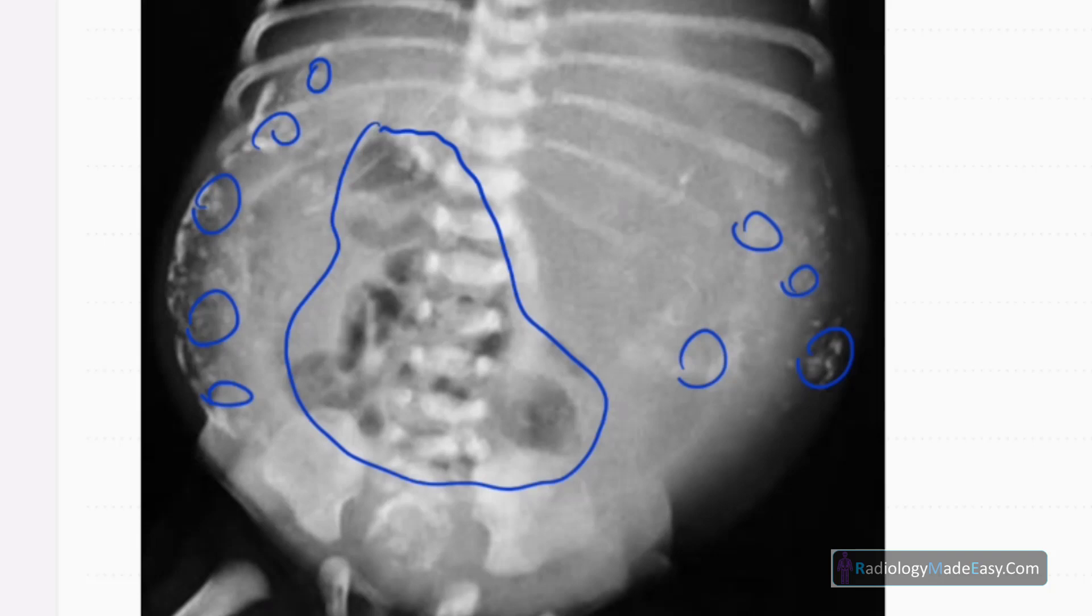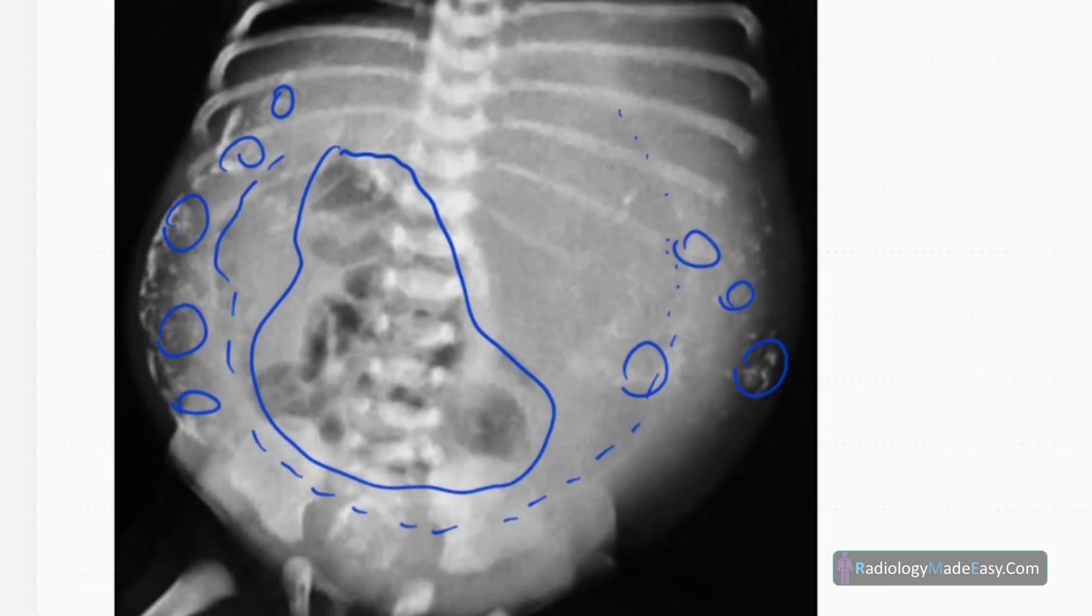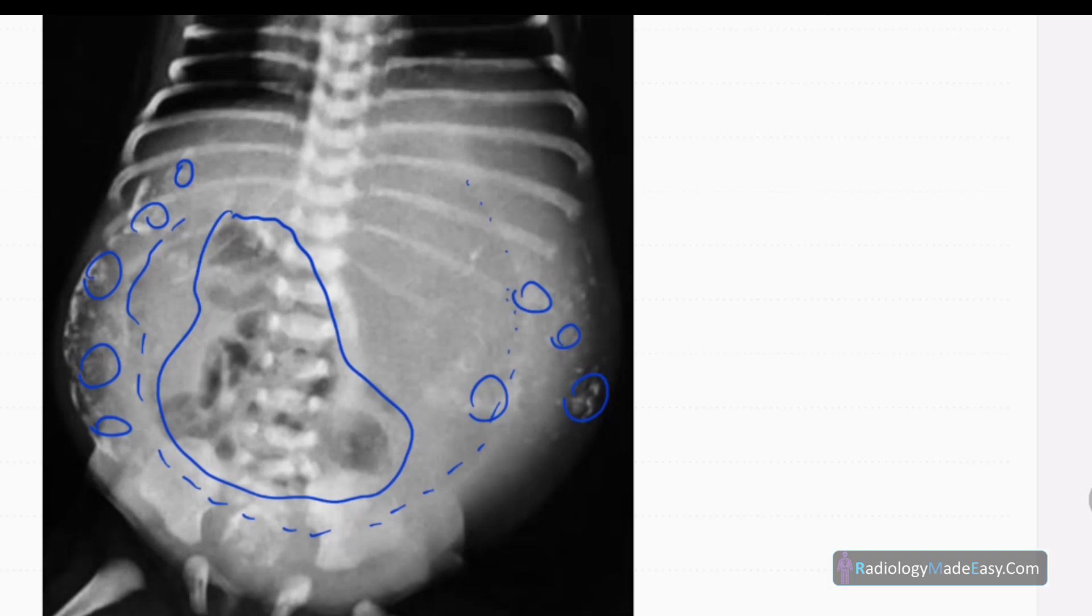There is another air lucency, a rounded lucency in the abdomen here. It's probably free air, you call it football sign. In supine position, air gets accumulated in the anterior part of the abdomen, so this is seen as a football sign.